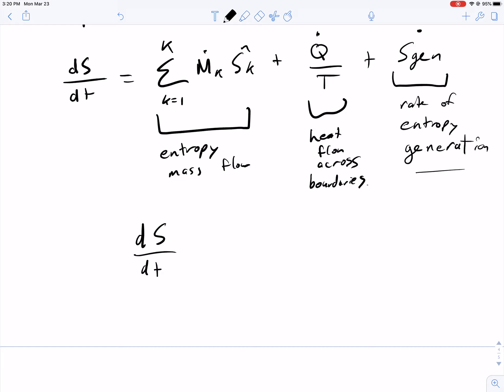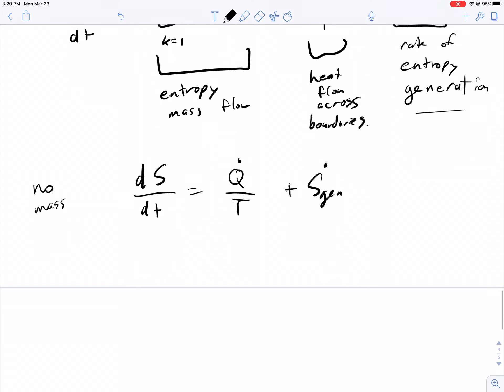For no mass flow: dS/dt equals Q dot over T plus S_gen dot. And of course, S_gen dot is greater than or equal to zero by definition.